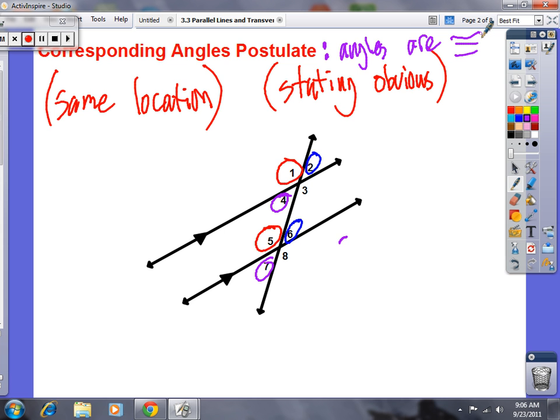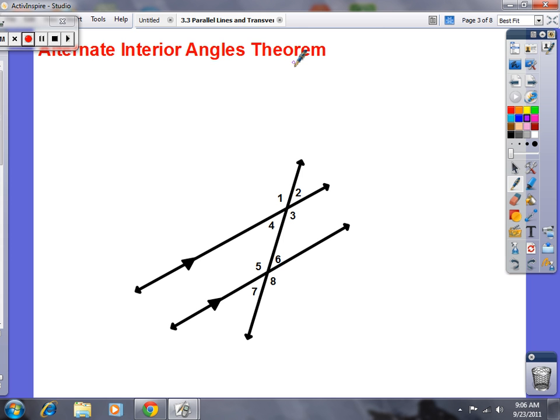The rest of these are proofs. These are theorems. So, a theorem is something that's been proved. Alternate interior angles. Do you remember which ones are alternate interior? Okay, the interior is the clue? What ones are on the interior?